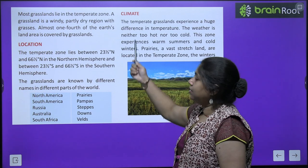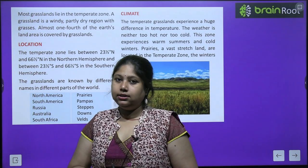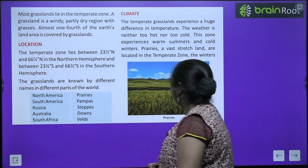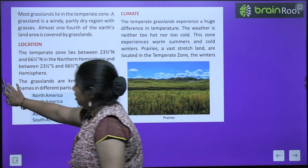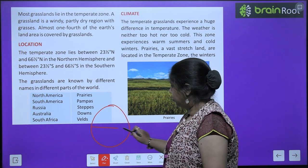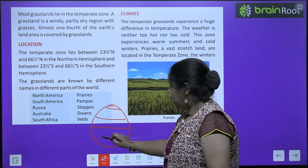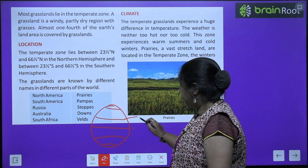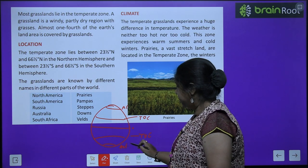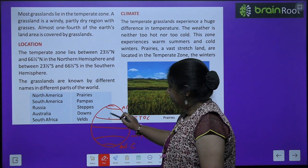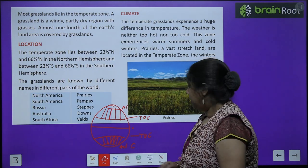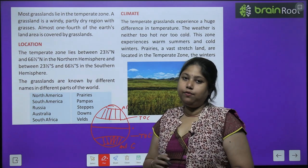Most grasslands lie in the temperate zone — between the Tropic of Cancer and the Arctic Circle, and between the Tropic of Capricorn and the Antarctic Circle. The temperate zone lies between 23.5 degrees and 66.5 degrees in both the northern and southern hemispheres. In these areas we find a variety of grasslands.